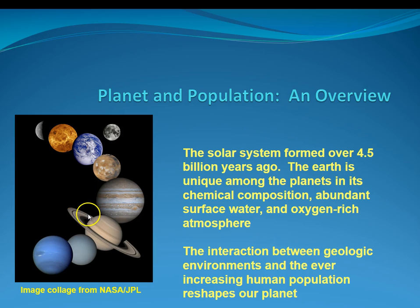Let's get started. This is Chapter 1, Planet and Population, an overview. This image here is showing the planets in our solar system, which are dated at 4.5 billion years. The Earth is unique in its chemical composition, surface water, and oxygen-rich environment. The interaction between geologic environments and the human population causes changes to our planet, and we will be discussing that in this chapter.